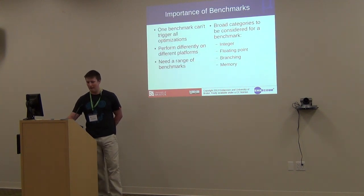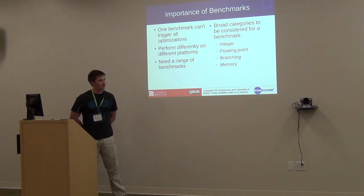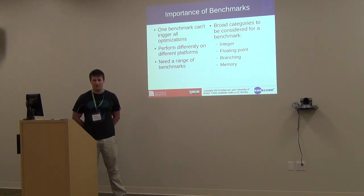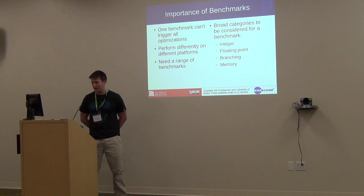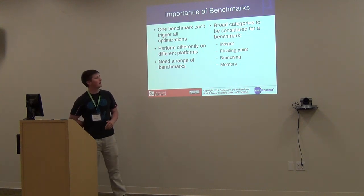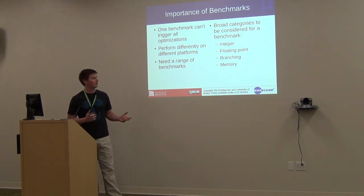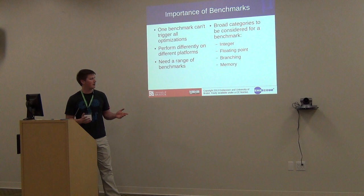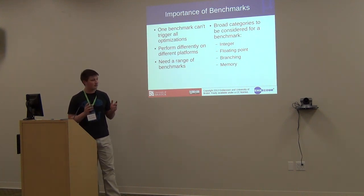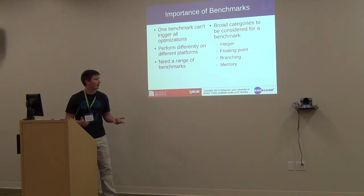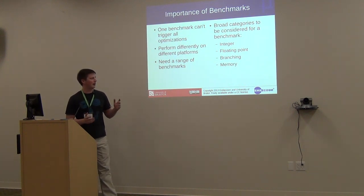Onto the benchmarks. They're important because the effect of optimisation depends on the structure of your code. We divided our benchmarks and evaluated them for four different categories. These categories are useful because each will have a slightly different energy profile. For example, memory-intensive benchmarks could have a different energy characteristic to code which does a lot of branching. Having a set of benchmarks covering all of these points adequately should give a view of the energy profile for each optimisation.